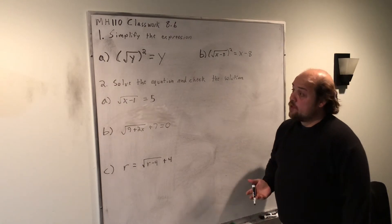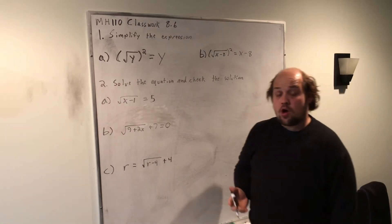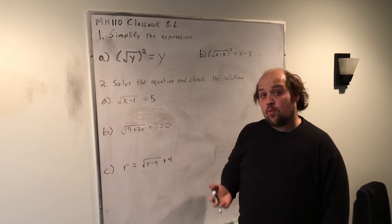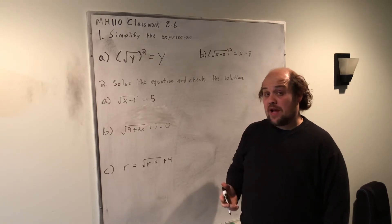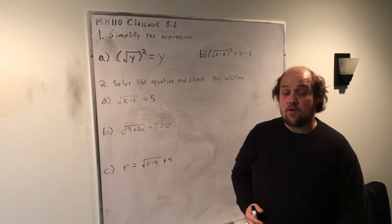When we go to solve equations that have roots in them, our goal is to isolate the root on one side of the equation, then square both sides. We just have to make sure when we do that, that the root is equal to a positive number, not a negative number, because if it's equal to a negative number, the answer would be no solution.